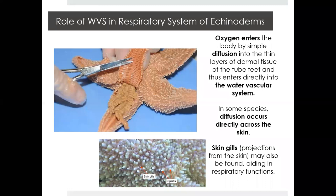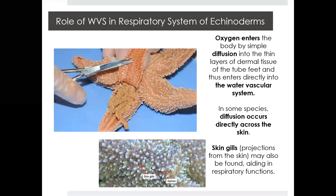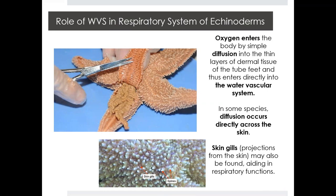Building on the water vascular system when talking about respiration: because echinoderms move water through their system, they utilize that pathway for respiratory functions as well. These echinoderms allow oxygen to enter the body via simple diffusion through thin layers of dermal tissue at the ends of the tube feet, entering the water vascular system. For some species, diffusion occurs directly across the skin. Some starfish also have what are called skin gills — small knobby projections on the skin that help aid in respiratory functions.